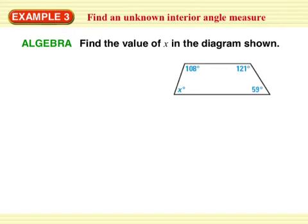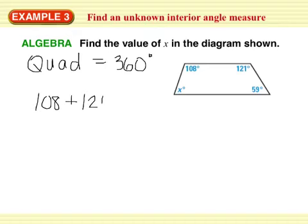Example 3. Find an unknown interior angle measure. Okay. For this one, we know what the equation is. This is just adding some algebra to it. So, first, I know that this is a quadrilateral. And that corollary said that quadrilaterals, their interior angles add to 360. So I can set that up. 108 plus 121 plus 59 plus x should equal 360 degrees. And I'm going to solve. So, collect all your like terms. 108 plus 121 plus 59 is 288.